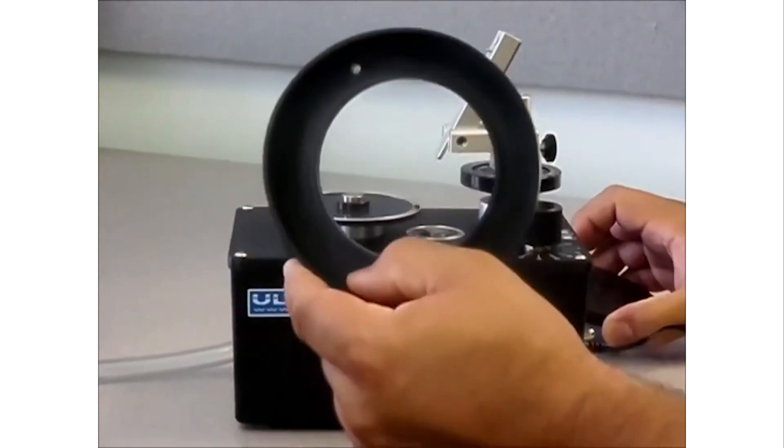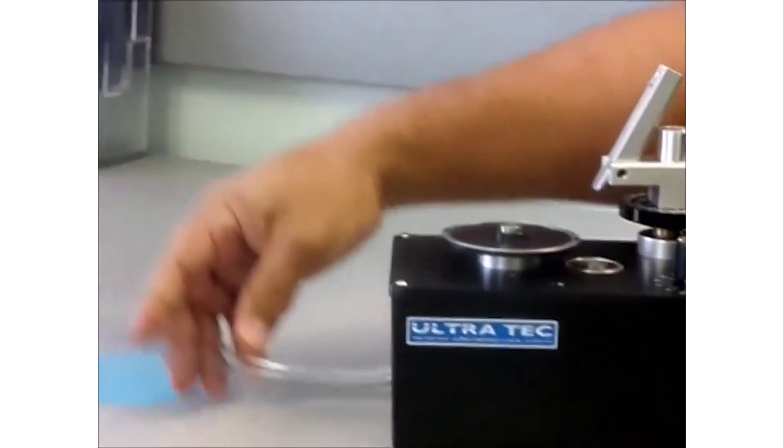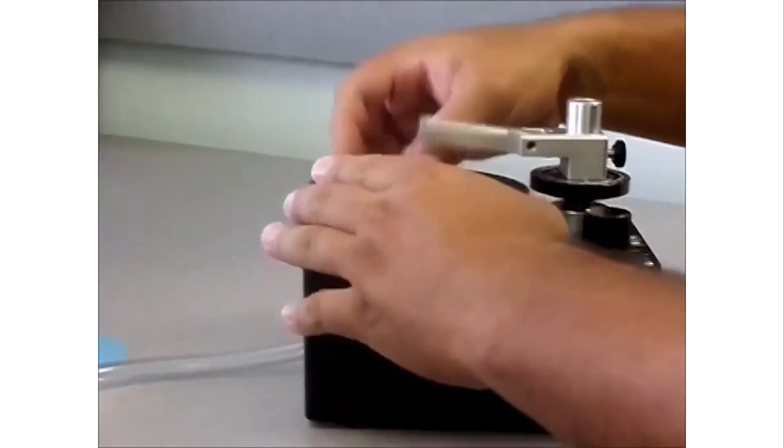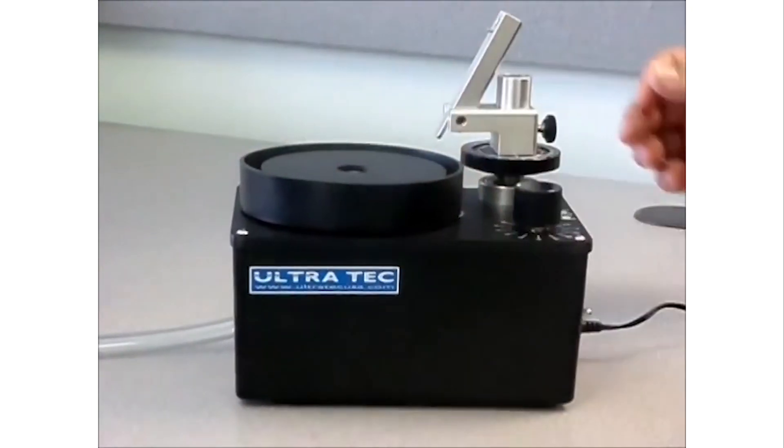There's a splash pan to catch debris from whatever you're polishing and there's a drain in the back here that comes through this hose that you can put into a larger water source to get all that liquid or whatever it is that you're using.